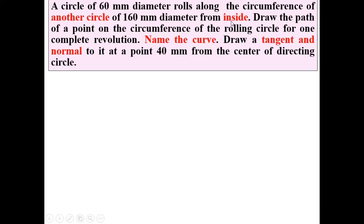The directing circle has 160 mm diameter. Draw the path of a point on the circumference of the rolling circle for one complete revolution, name the curve, and draw a tangent and normal to it at a point 40 mm from the center of the directing circle.